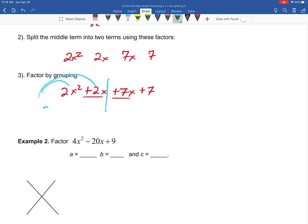So when we group and look at each part, we can pull out a 2x from the first pair and we would be left with x + 1 when we do that. When we factor the second part, we notice that we can pull a 7 out of both of those, and we would be left with x + 1 when we do that.